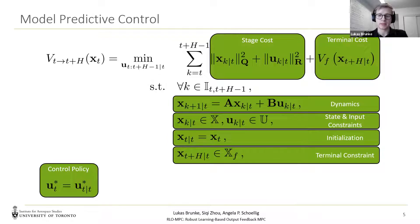The control input applied to the system is only the first control input from the sequence of optimal control inputs. Then the optimization problem is solved again at the next time step.